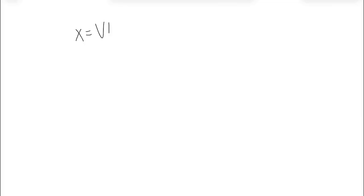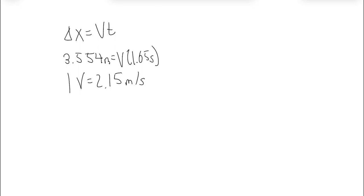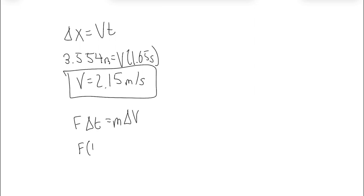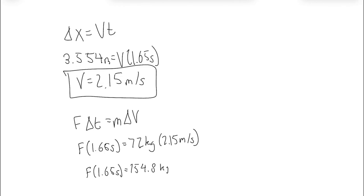From this clip, we can see that Marty is flying back for about 1.64 seconds. With all of our values, let's calculate Marty's in-air velocity with the equation x equals vt, where x is the change of position, v is velocity, and t is time. After working it out, his velocity comes out to 2.15 meters per second. Using the most important equation in all of physics, we can find the force put on Marty. Once we work out F=ma, we find the generated force is 93.82 newtons.